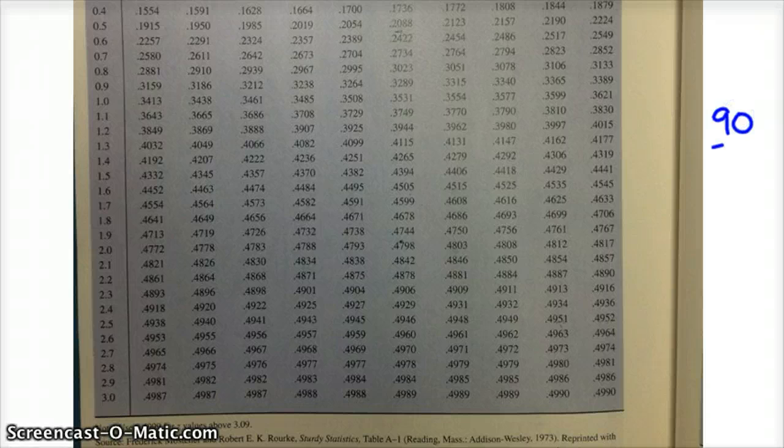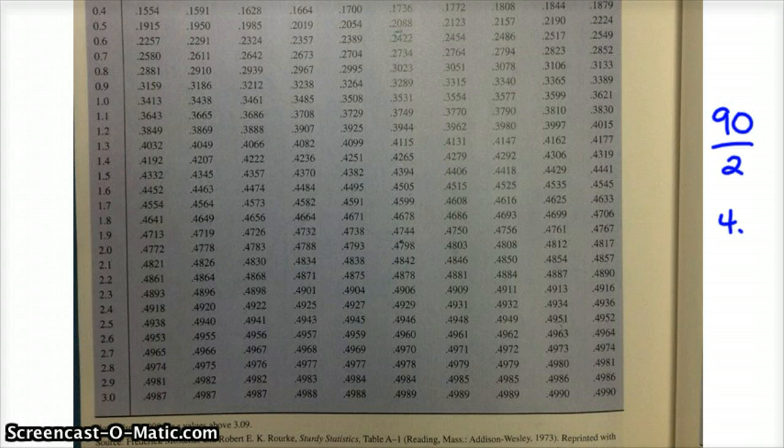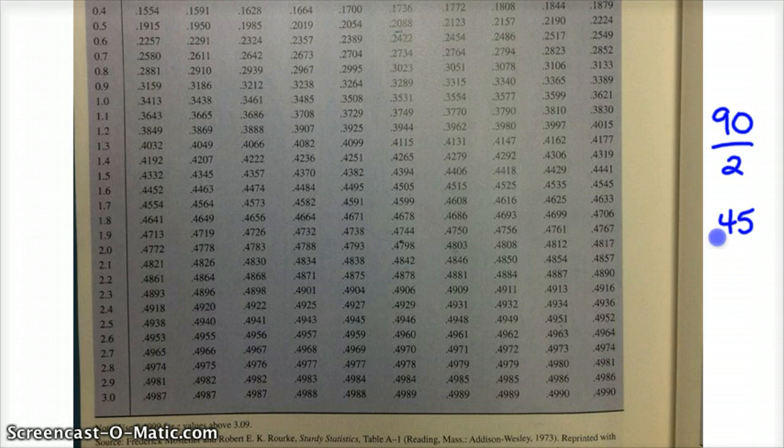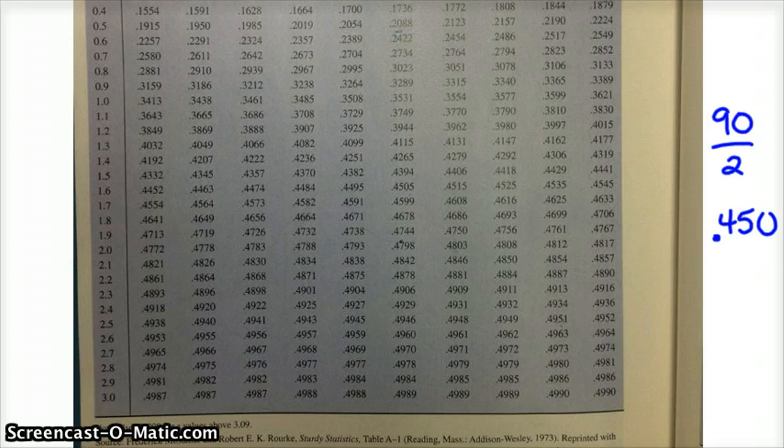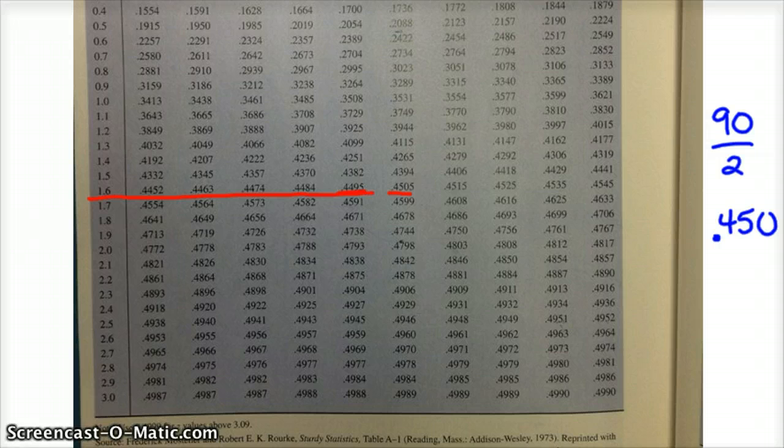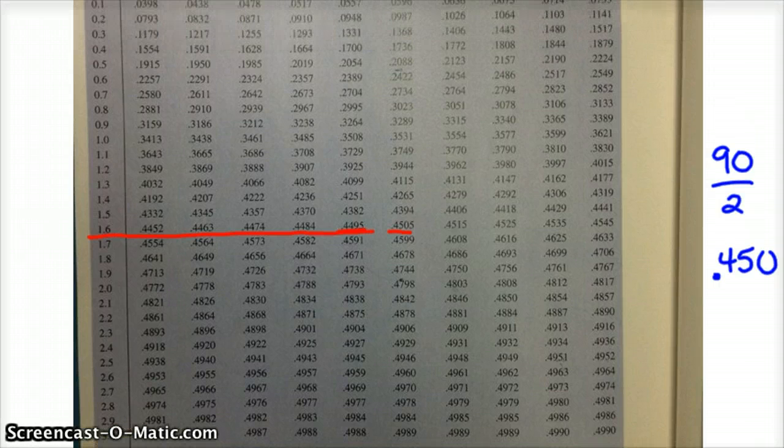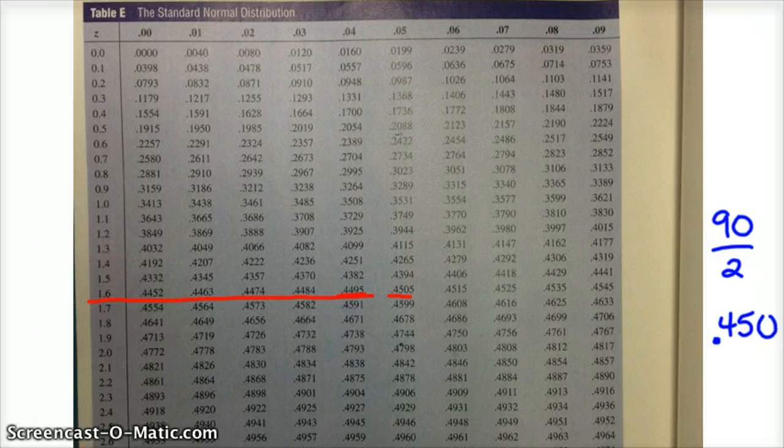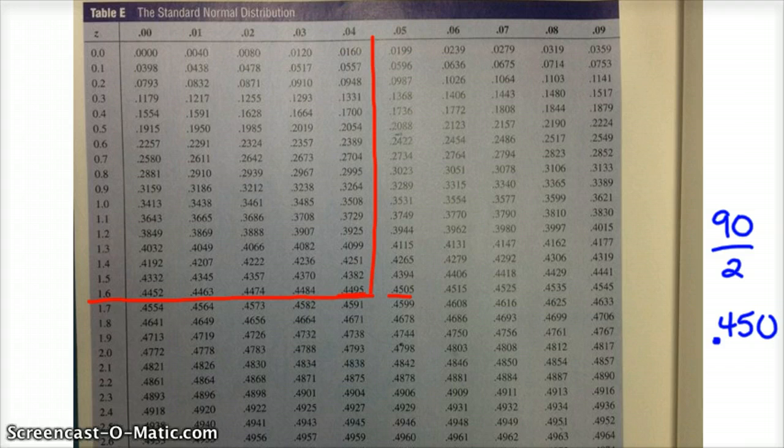And alpha divided by 2 is 90. So 90 divided by 2 is 45. So we're looking for 0.450. And so we just go on to our Z score and find that. So here's 0.4505. And here's 0.4495.